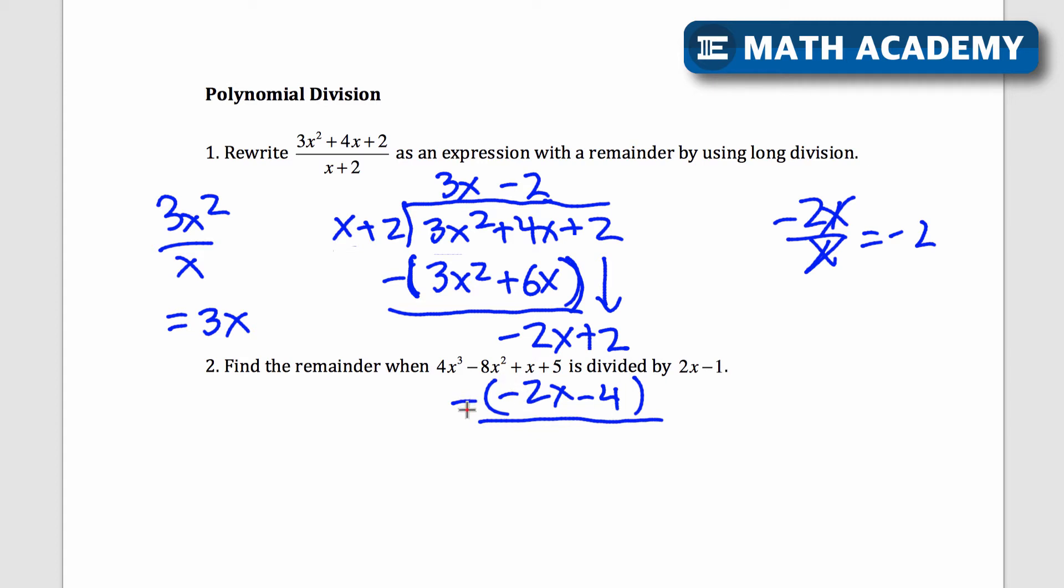I'm going to subtract what I have here, so parentheses and a minus sign. Negative 2x minus negative 2x, so plus 2x. That's 0, that will cancel out. 2 minus negative 4 is 2 plus 4, which is 6. And that's my remainder. What do you do with the remainder? Well, you do the remainder divided by the denominator or your divisor here. So that will be plus 6 divided by x plus 2.